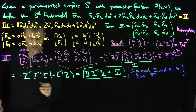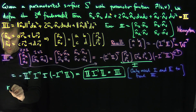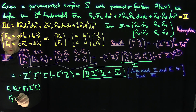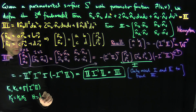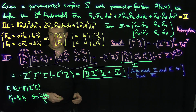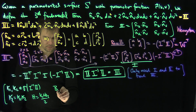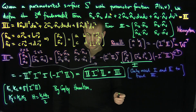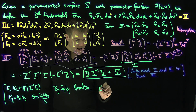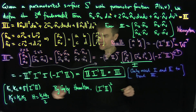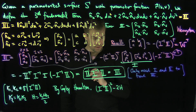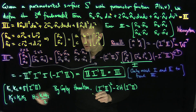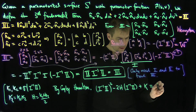Now there's one other cool thing. We know that if kappa_1 and kappa_2 are the eigenvalues of negative I inverse II, then the Gaussian curvature K equals kappa_1 times kappa_2, and the mean curvature H equals (kappa_1 plus kappa_2) over 2. By the Cayley-Hamilton theorem, the matrix negative I inverse II satisfies: (negative I inverse II) squared minus 2H times (negative I inverse II) plus K equals 0.